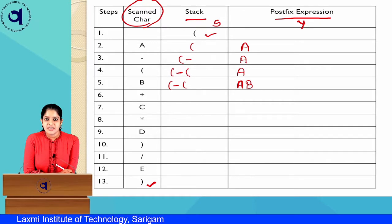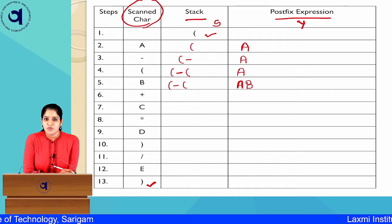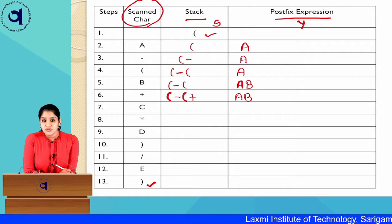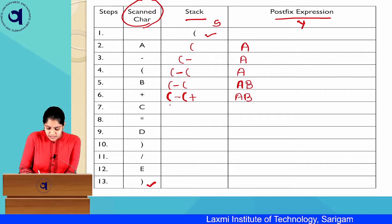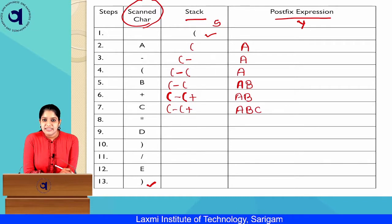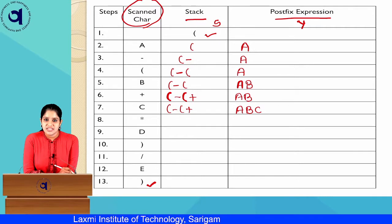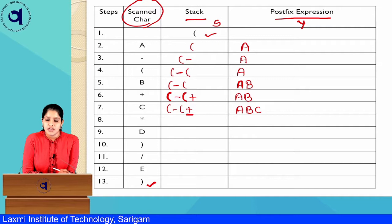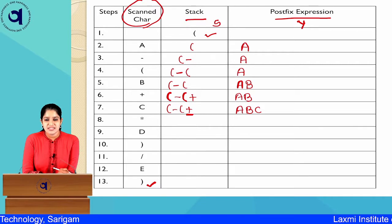Next is plus, an operator. There is no other operator on the stack top — only an opening bracket — so we push plus directly. Stack is now: bracket, minus, bracket, plus. Then C is an operand, so we push it to Y: A, B, C. Next is star (asterisk), an operator. Plus is on top of the stack, but plus has lesser precedence than star, so we simply push star. Stack: bracket, minus, bracket, plus, star.